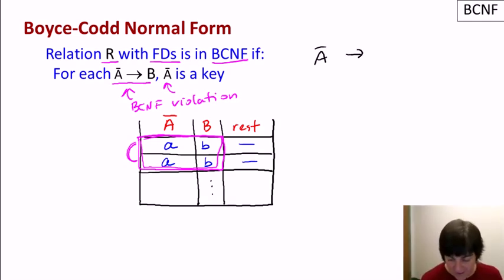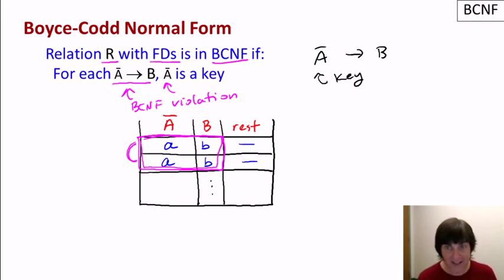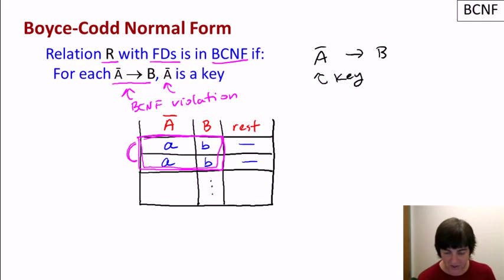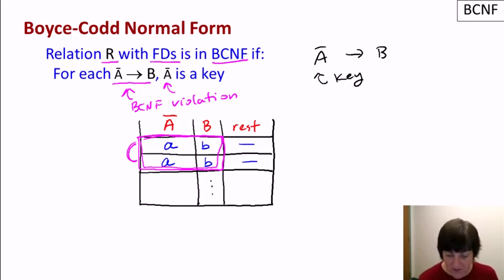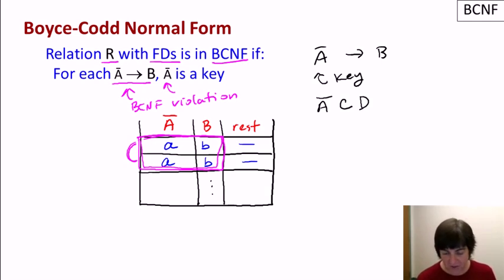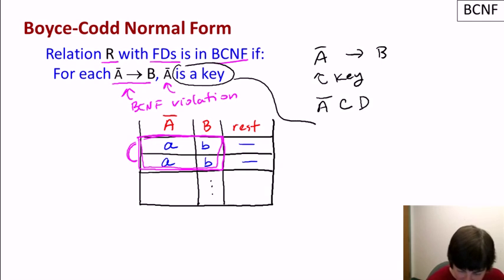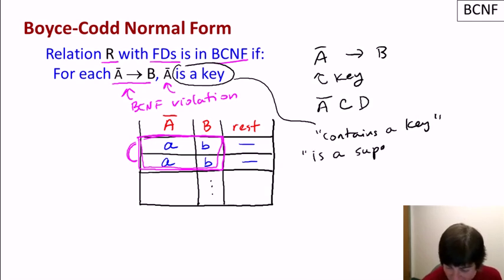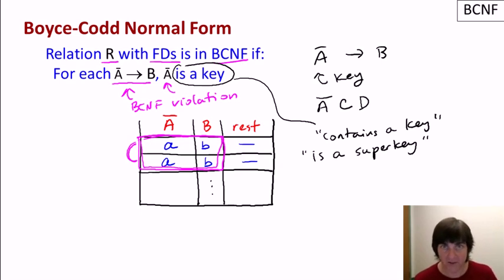To clarify: the requirement is not that the left-hand side be declared as the primary key, only that it is in fact a key — meaning it functionally determines all other attributes, or equivalently, is never duplicated across tuples. Any superset of a key is also a key. So BCNF definitions sometimes say the left-hand side 'contains a key' or 'is a super key'; all of these mean exactly the same thing.